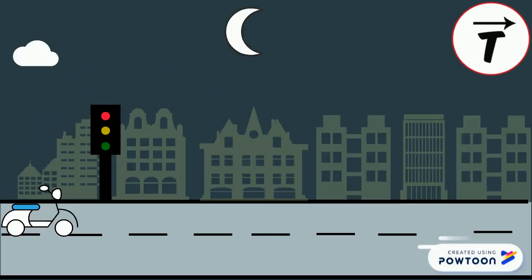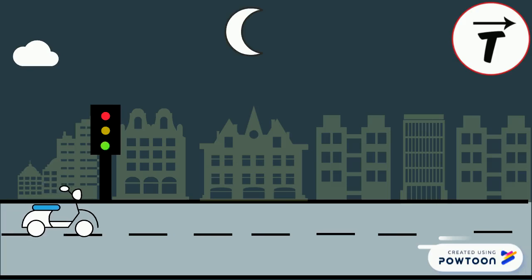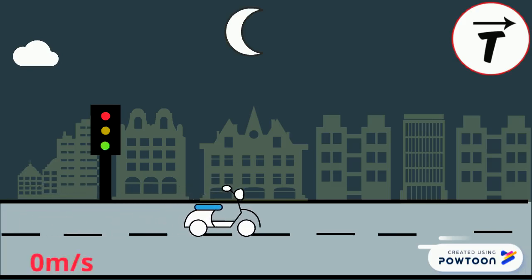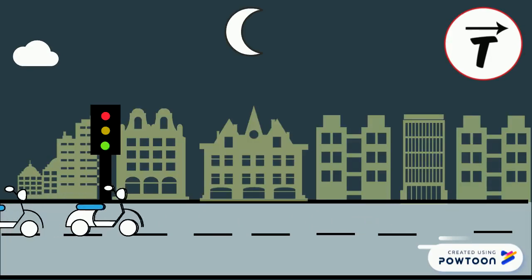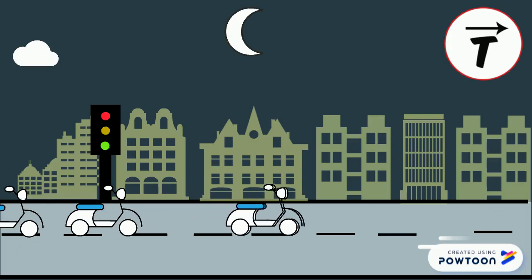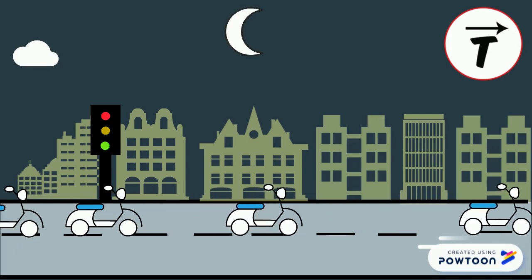The scooter is initially at rest. When the light turns green, the scooter speeds up from zero to a certain speed. We say that the scooter accelerates. During its acceleration phase, the speed of the scooter increases, which means that the scooter covers more distances during equal time intervals.